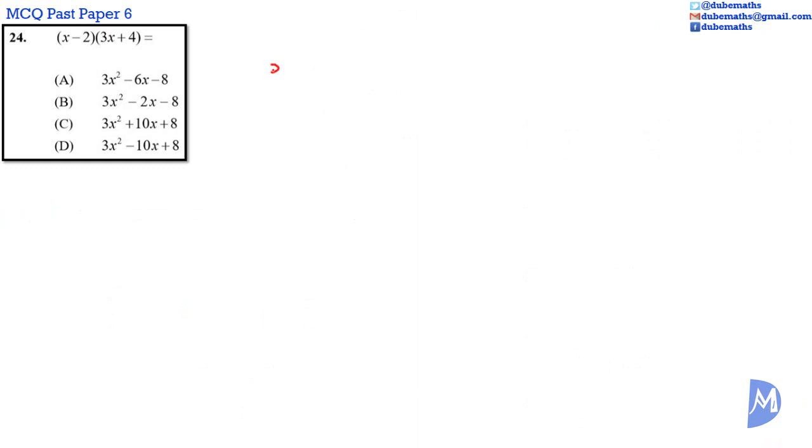Question 24: X minus 2 multiplied by 3X plus 4. We need to multiply each term in each bracket by the terms in the other bracket.